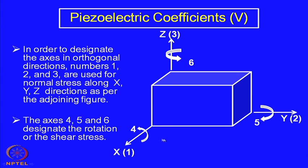So there are 6 elements of the stress tensor: 1, 2, 3, 4, 5, 6. Three of them are normal stresses and three are shear stresses. This is how we represent the stress system and find the equations as well as a series of coefficients in different directions.